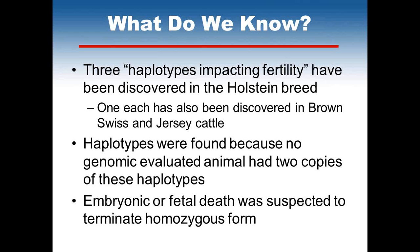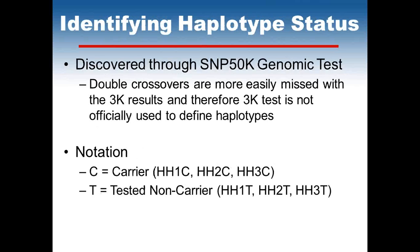We have information on three haplotypes impacting fertility discovered in the Holstein breed. One has also been discovered in Brown Swiss and one in Jersey cattle. These haplotypes were found because no genomically evaluated animal had two copies of these haplotypes, and embryonic or fetal death was suspected to terminate in the homozygous form. They were discovered through the SNP 50K genomic test. The 50K is the standard for detecting these haplotypes, as double crossovers might occur within the markers for the 3K test and would be more easily missed.